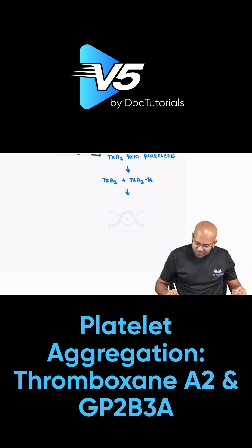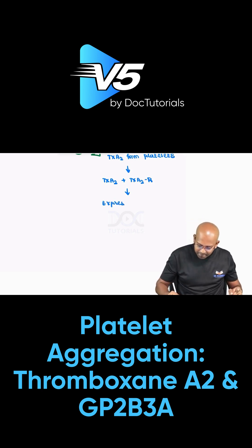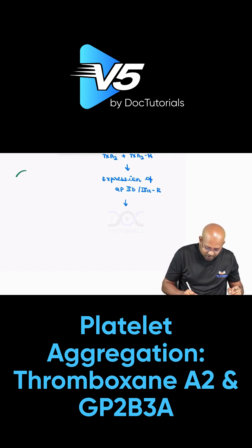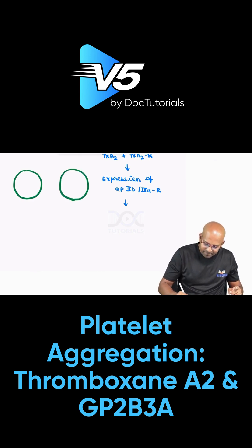Because of the interaction between thromboxane A2 and the thromboxane A2 receptor, there will be expression of glycoprotein 2b3a receptor. I will draw the diagram: here is the first platelet, and here is where the second platelet is going to be, from which there will be release of thromboxane A2, which will bind with the thromboxane A2 receptor.